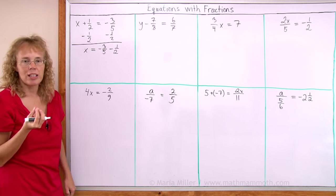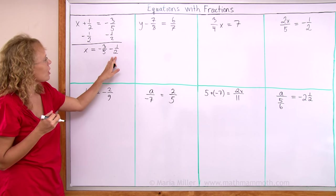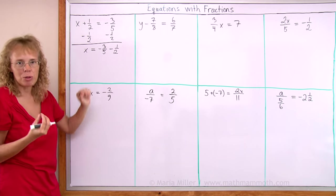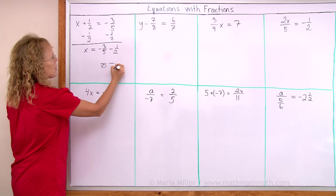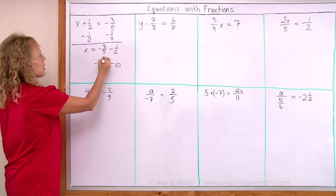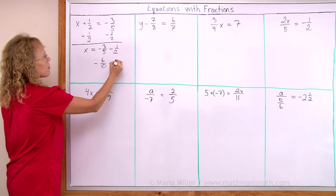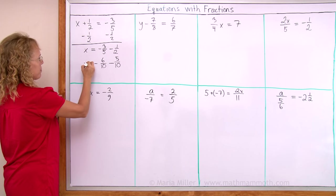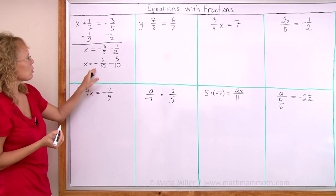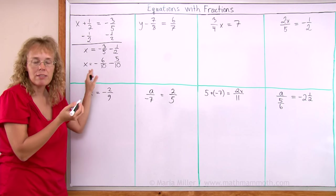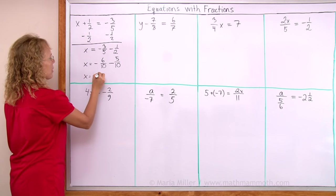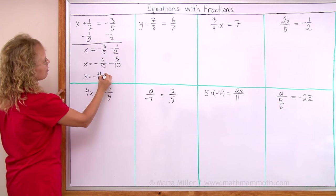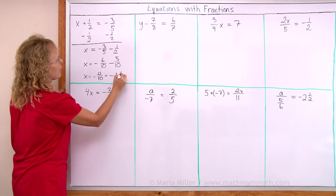Over here we have negative three fifths minus one half to calculate now. This is a fraction subtraction and the denominators are different, so I need to find a common denominator which is ten. I will get six tenths minus five tenths, so we get negative eleven tenths or negative one and one tenth.